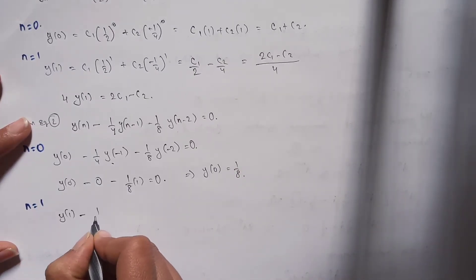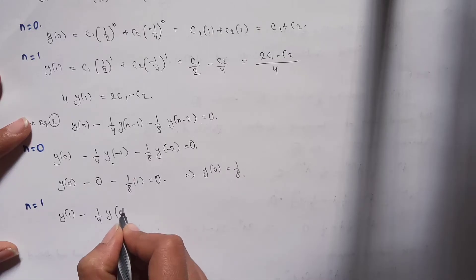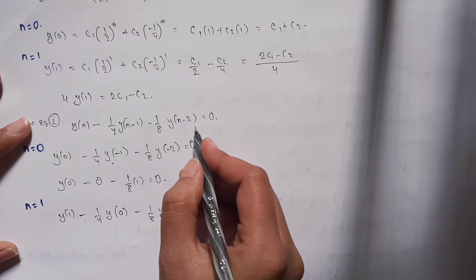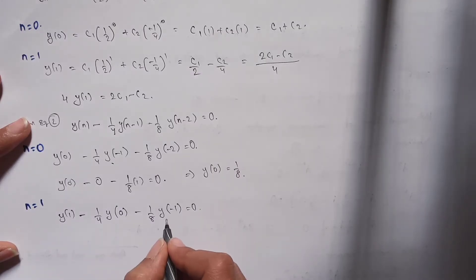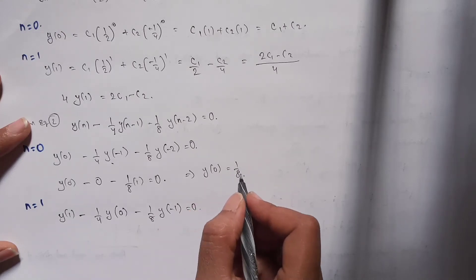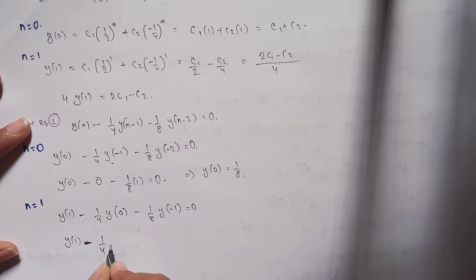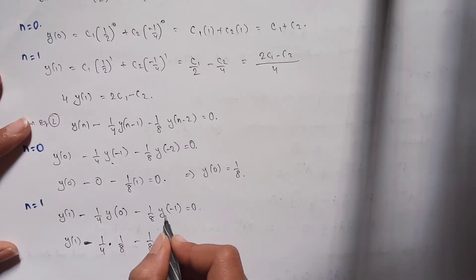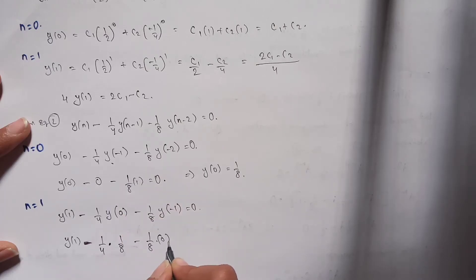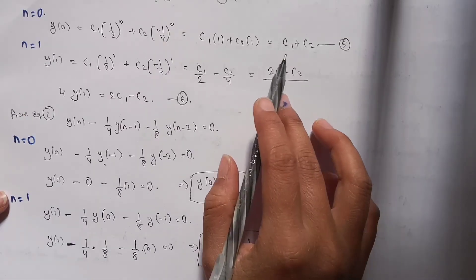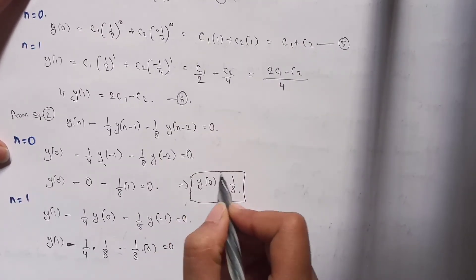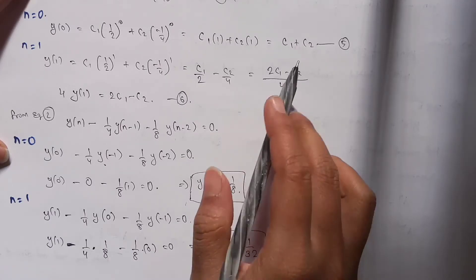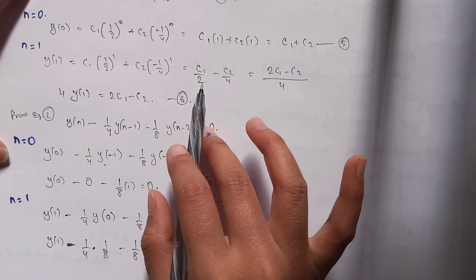Now substituting n = 1 into equation 2: y(1) − (1/4)y(0) − (1/8)y(−1) = 0. We know y(0) = 1/8 and y(−1) = 0, so y(1) − (1/4)(1/8) − 0 = 0, giving y(1) − 1/32 = 0, so y(1) = 1/32. We now have the values y(0) = 1/8 and y(1) = 1/32, which we'll substitute into equations 5 and 6.